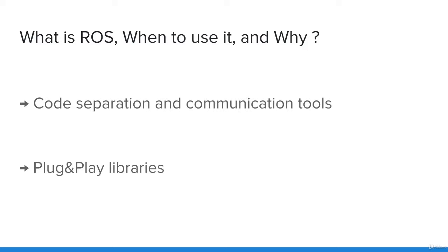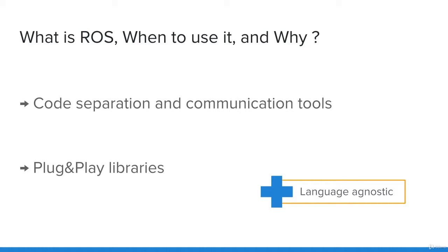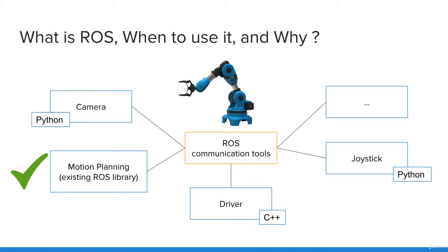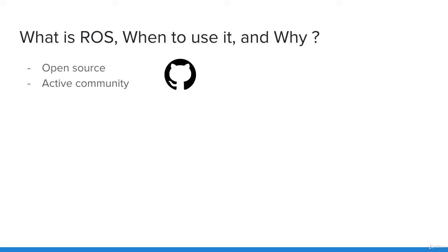ROS is also said to be language agnostic, meaning you can program some parts of your application in one programming language and another part in a different language, simply because the communication tools don't rely on a specific language. In this course, we will mostly focus on the ROS basics and core functionalities that will enable you to easily start any robot application powered by ROS, using Python and C++. ROS is also open source with an active and growing community, so you can see what's going on, get help, share your project, and even contribute if you wish.